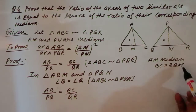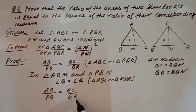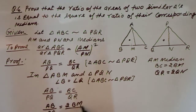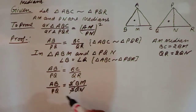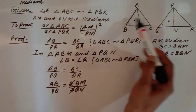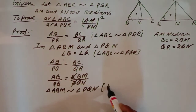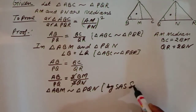Since AM is a median, BC = 2BM, so BC becomes 2BM. Similarly QR = 2QN. Substituting: AB/PQ = 2BM/2QN. The 2s cancel, so we get AB/PQ = BM/QN. We now have angle B = angle Q and the ratio of the included sides BM/QN equal to AB/PQ — so triangle ABM is similar to triangle PQN by SAS similarity.